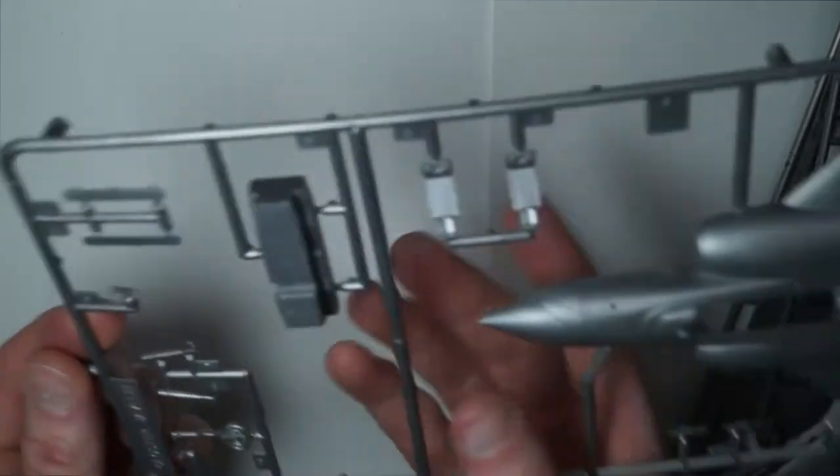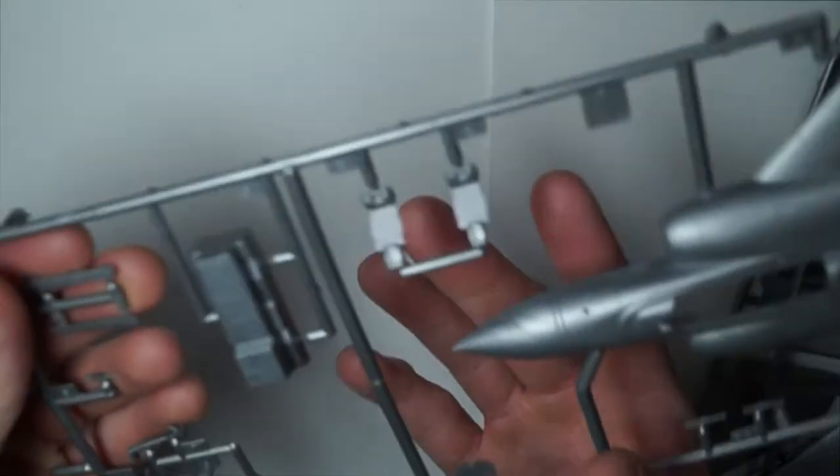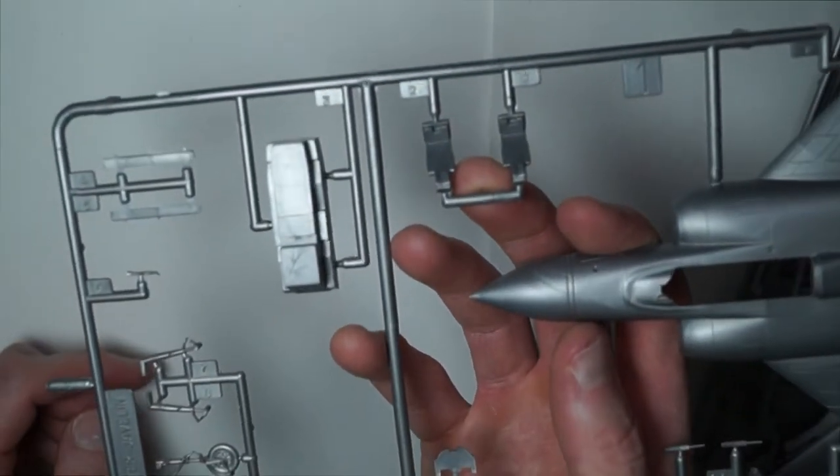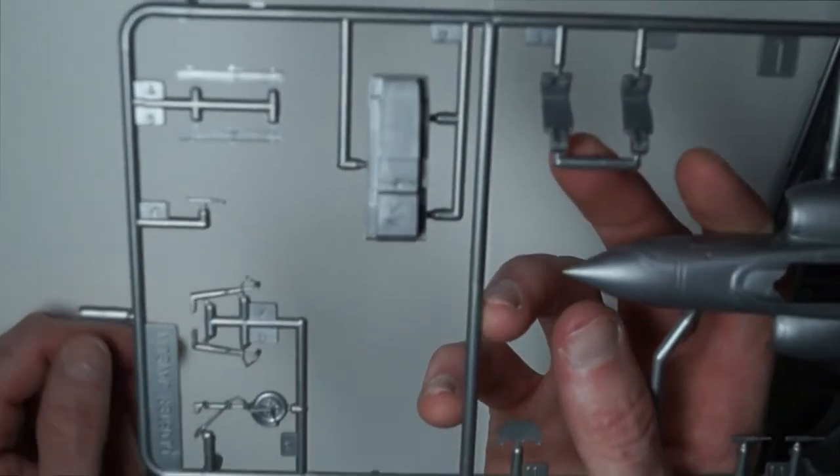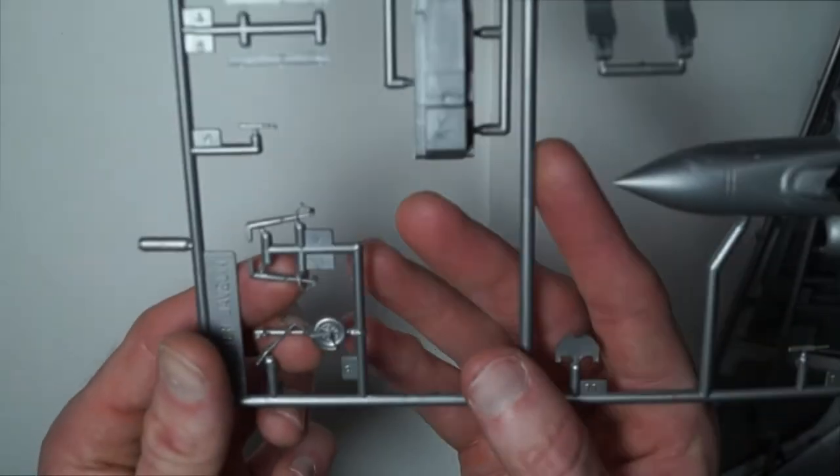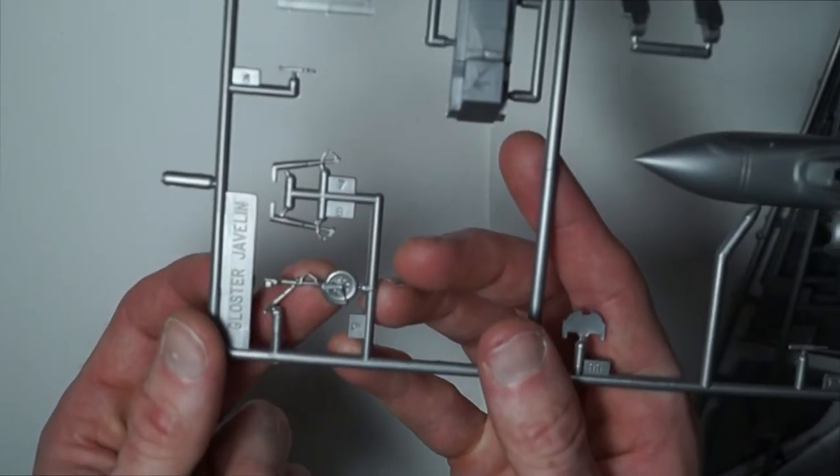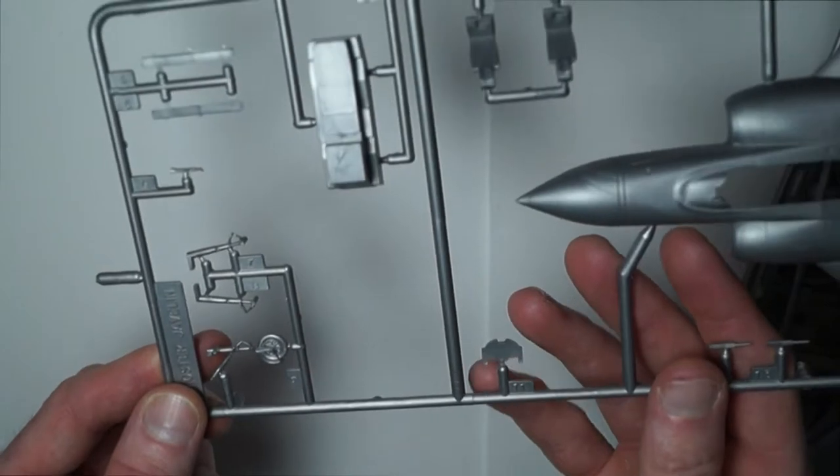The cockpit tub is the pilot and co-pilot seats, landing gear oleos and the nose wheel on sprue one.